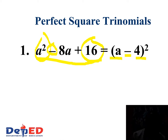Let us check. Get the square of the first term: a squared is a². The square of the second term is 16. Then get the product of the two terms: a times negative 4 is negative 4a. And twice of that, we have negative 8a.